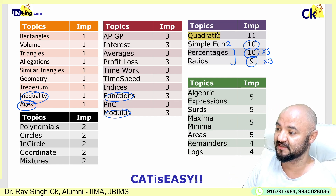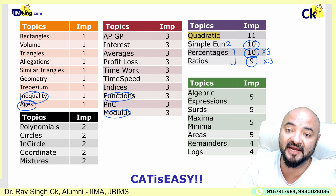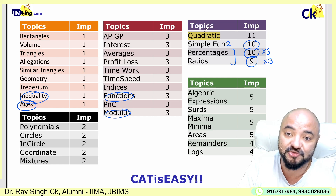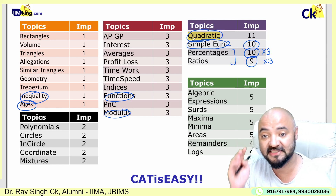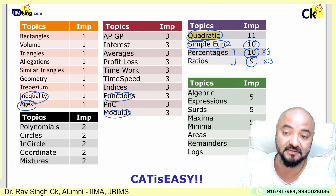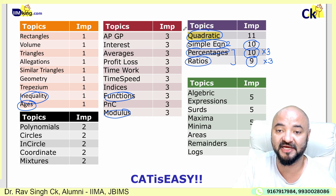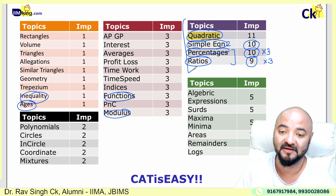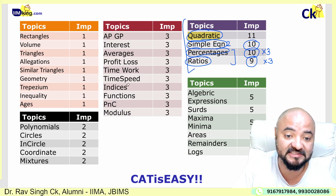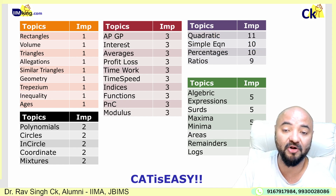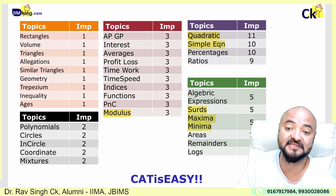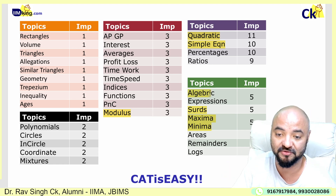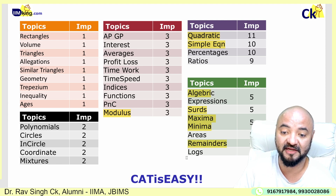Please take a screenshot of this. These are the most important topics for the CAT exam — number one, you have to do quadratic equations. I'm going to dedicate more time to quadratic equations and simple equations. These are easy topics. If you do quadratic equations, simple equations, percentages, and ratios, your cutoff can be cleared. So please take a note of where to focus more.